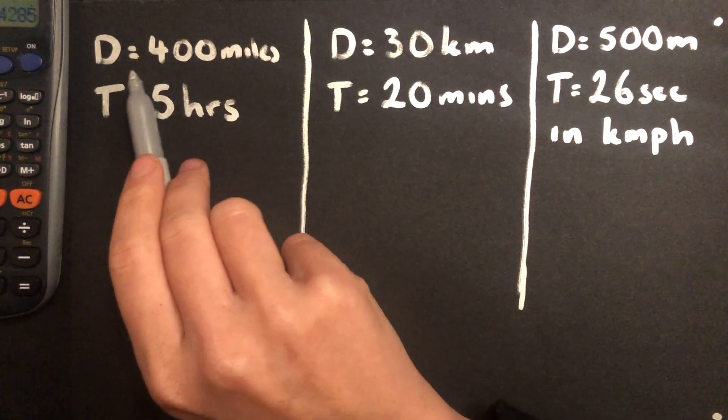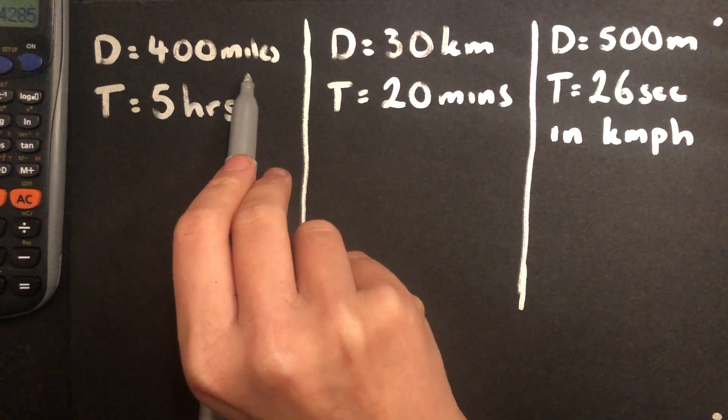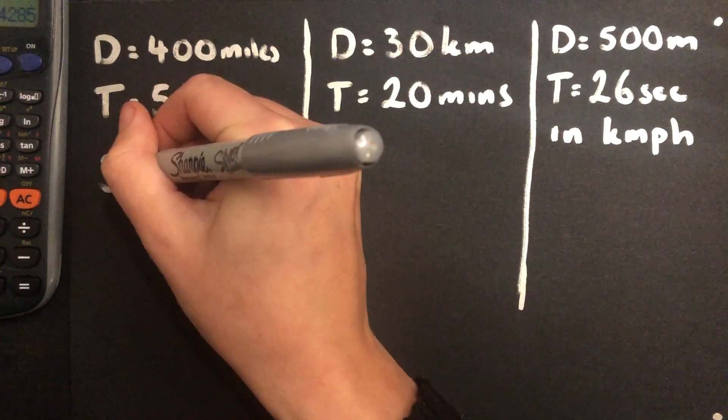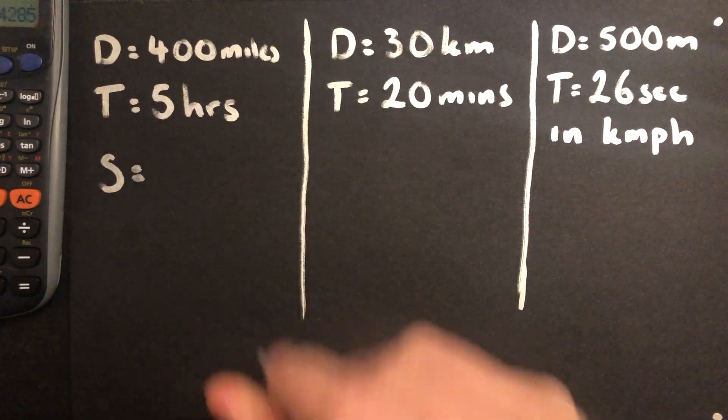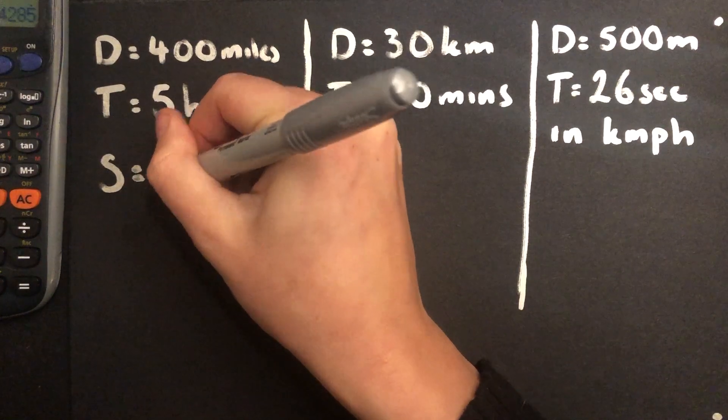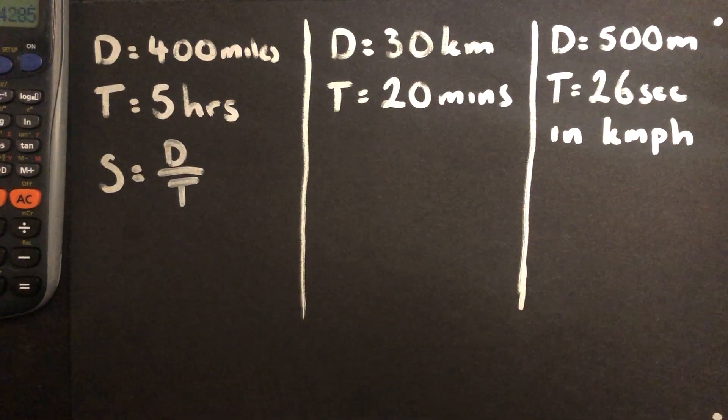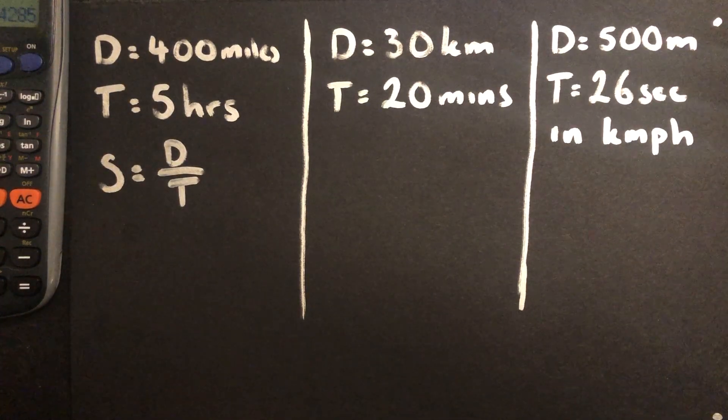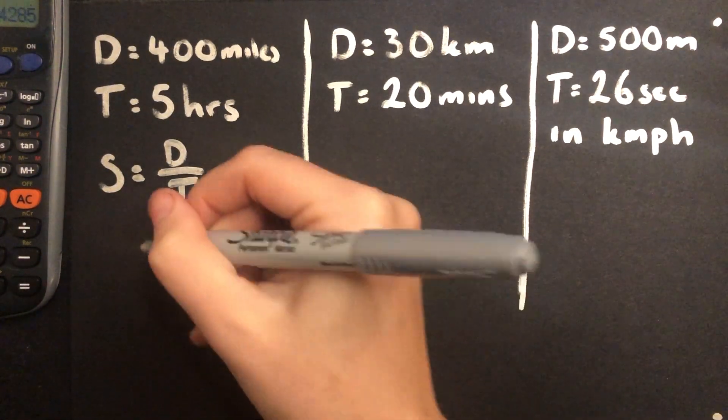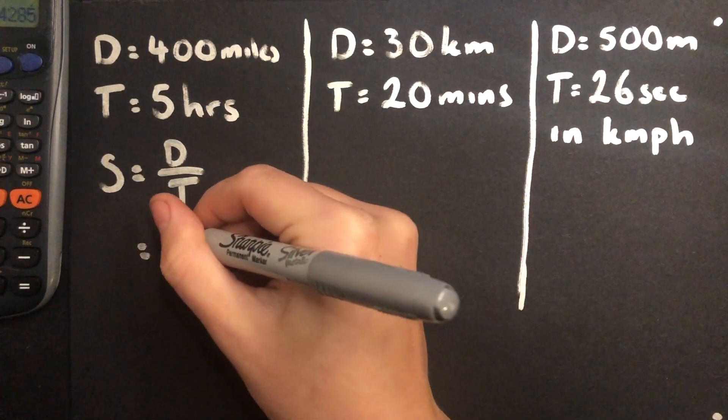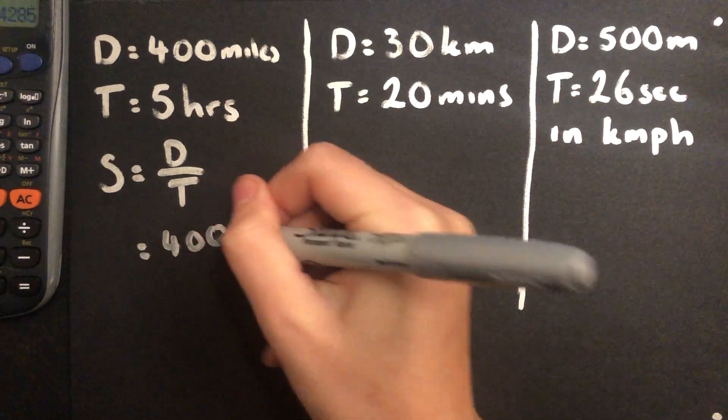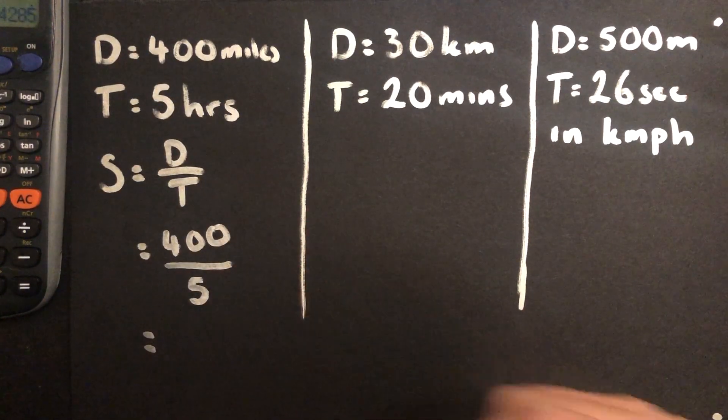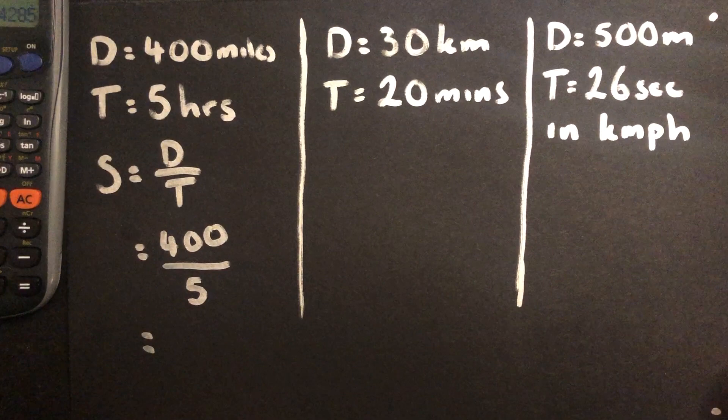First one, we've got the distance is 400 miles and the time is 5 hours. So if I want to work out the speed of whatever this thing is, I start with my formula. Speed is equal to distance over time. Now I'm writing that as a fraction. I prefer it that way. But just remember that a fraction is just a fancy divide. So it might as well be distance divided by time. I substitute in here. My distance is 400 and my time is 5. So I'm doing 400 divided by 5.